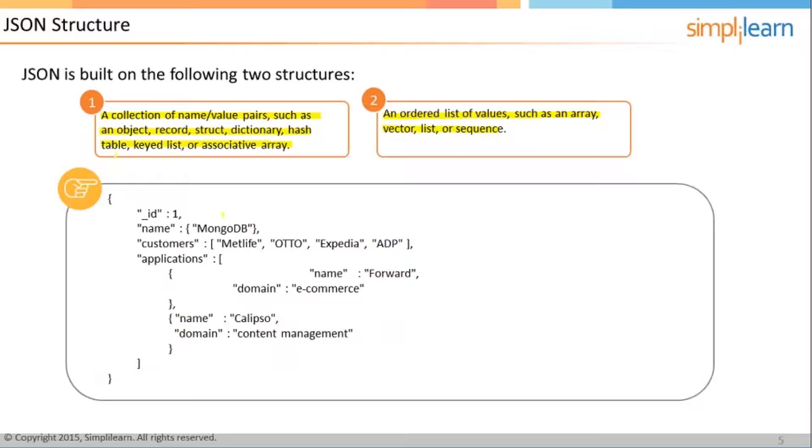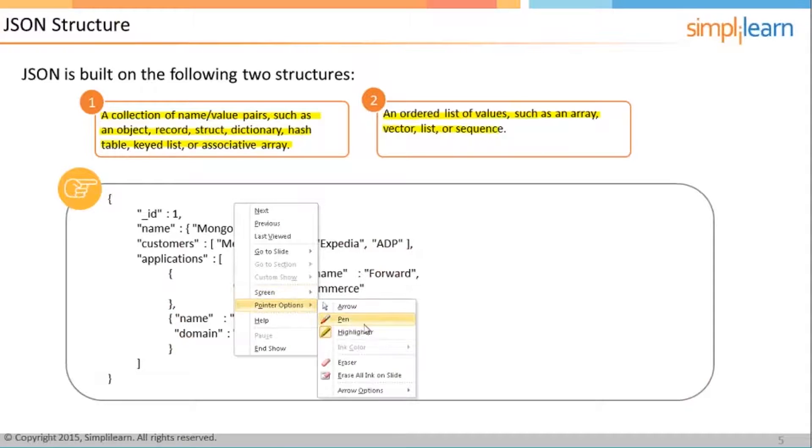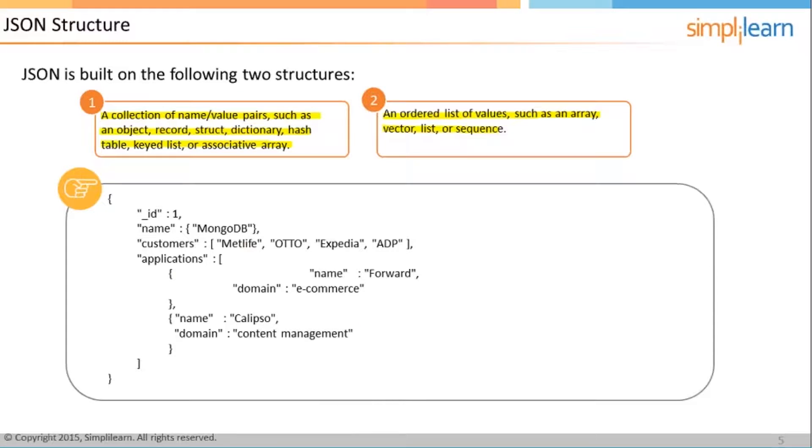Here you see an example of a document where we have ID as a key, 1 as the value, name as the key with a string coming in. Here again in the third key-value we have an array coming in which has four values.